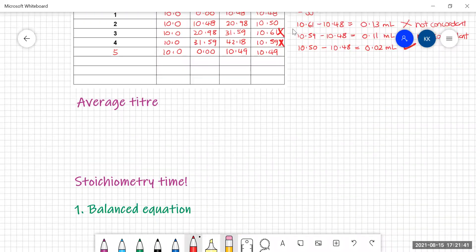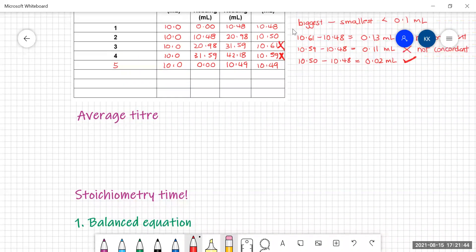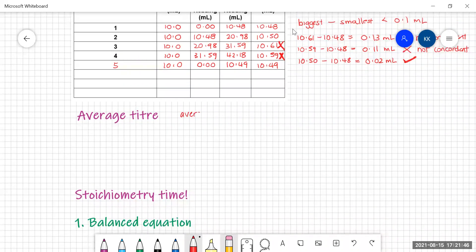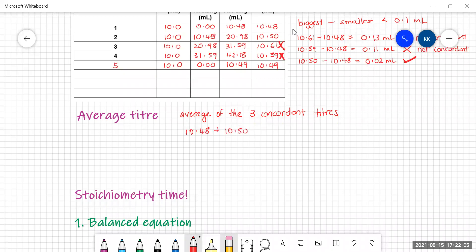So the first thing I need to do is work out my average titer. So I need the average of the three concordant titers. So for me, that is 10.48 plus 10.50 plus 10.49 over three. So my average titer is 10.49 mils.